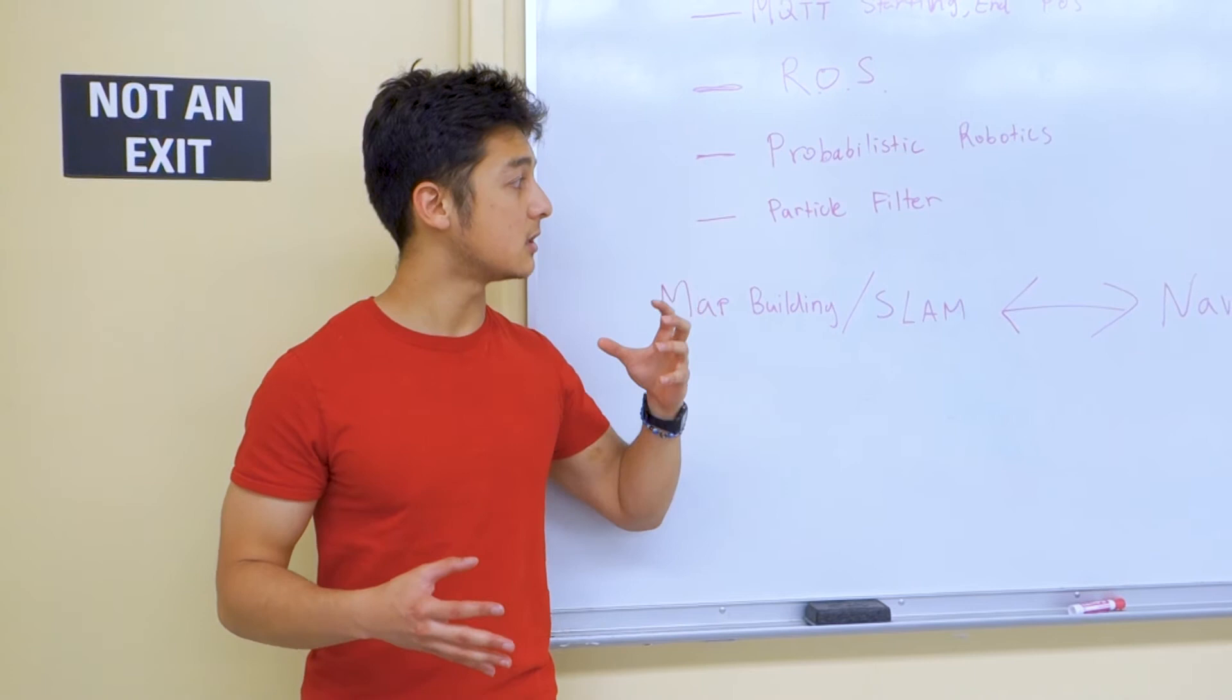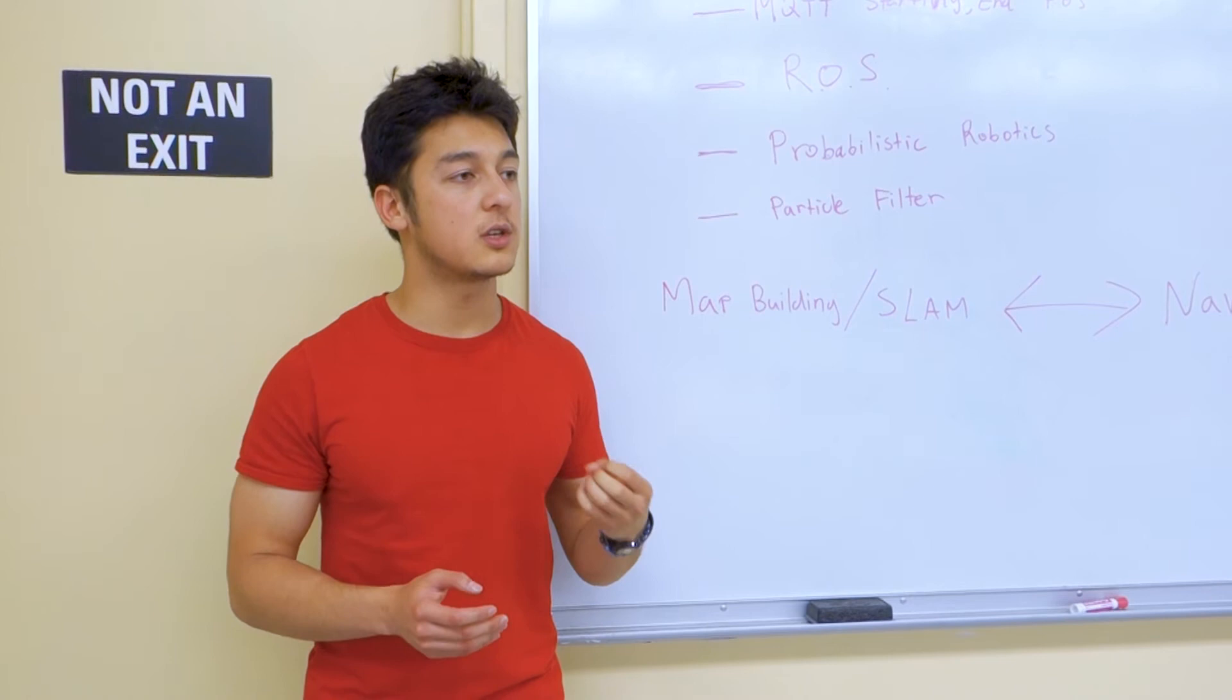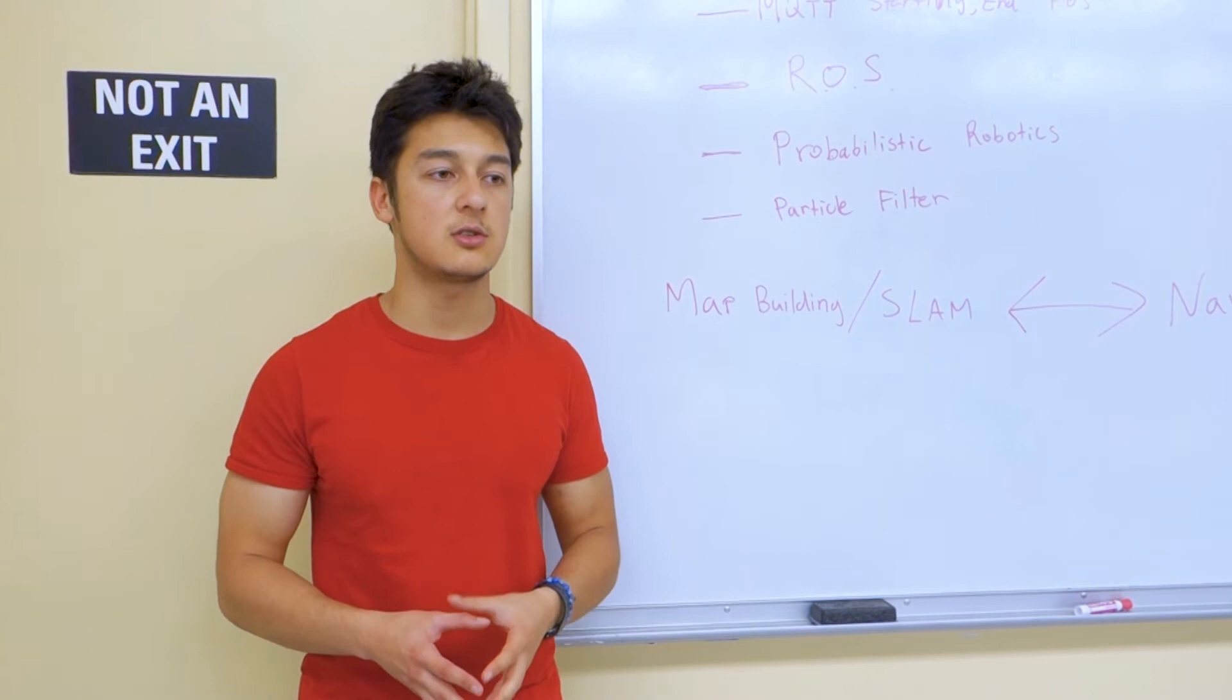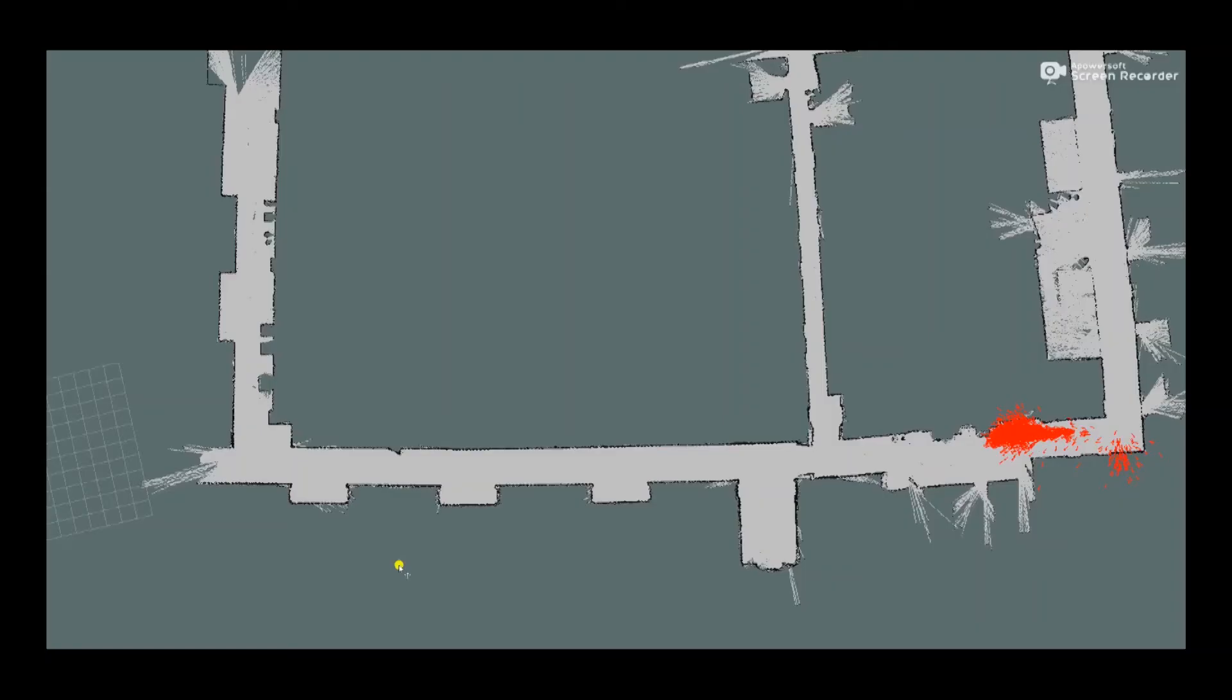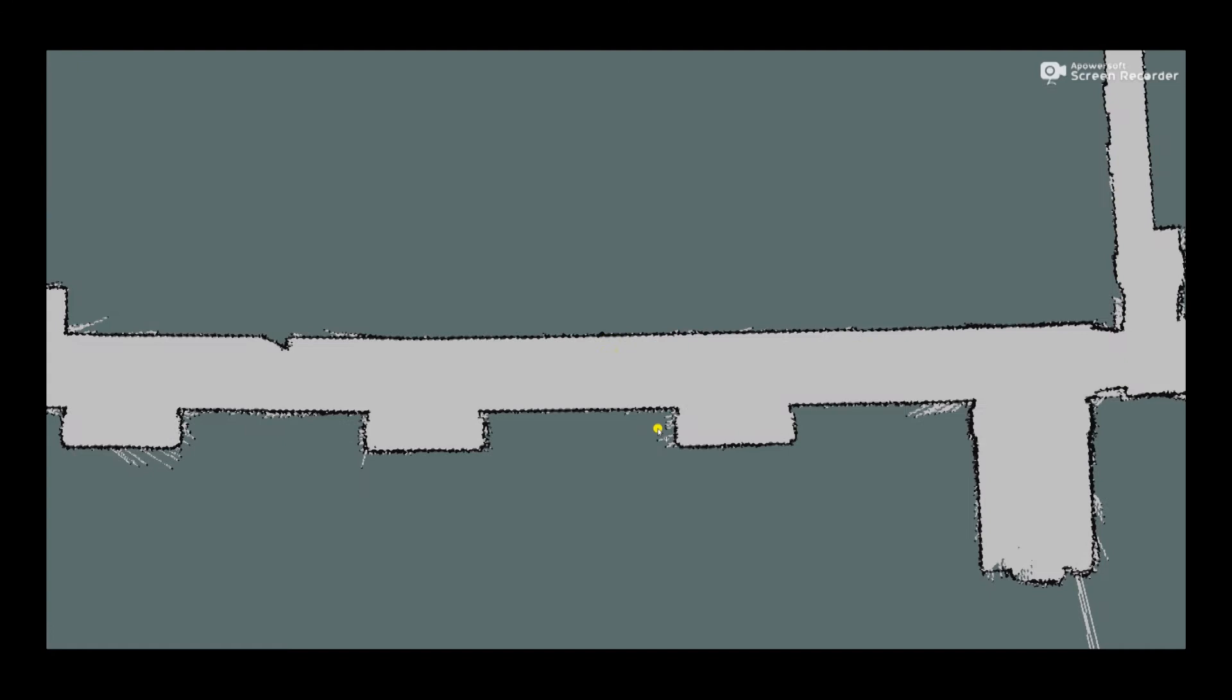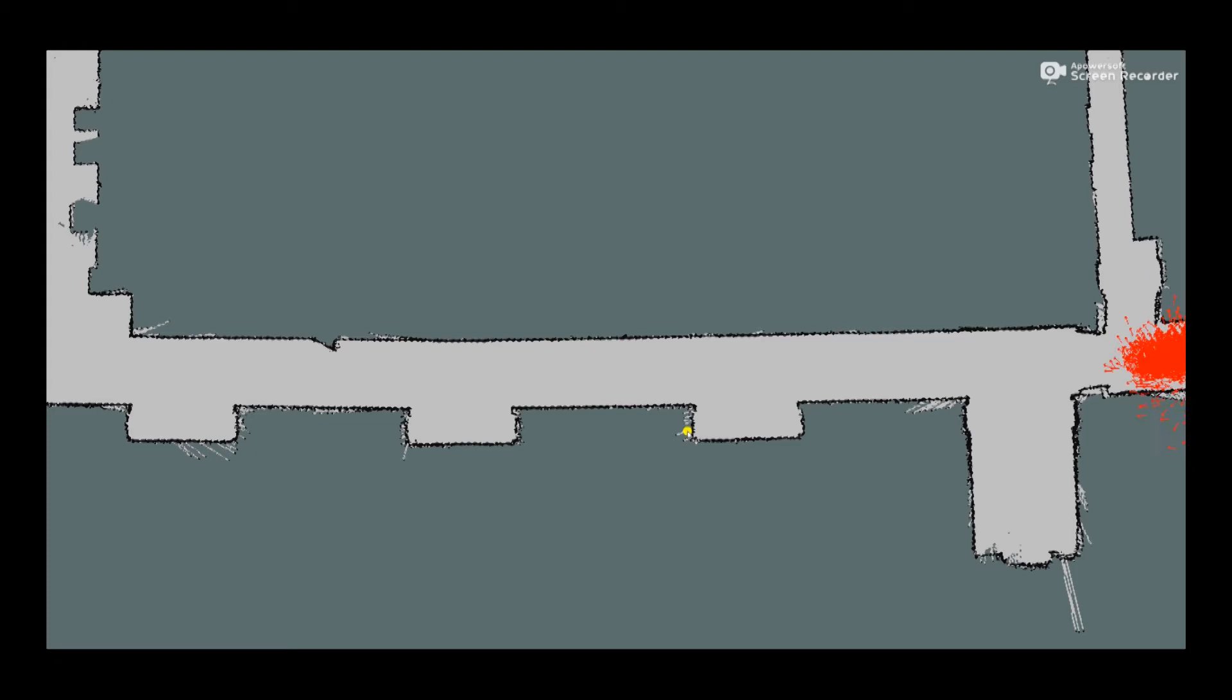We can't rely solely on the sensors to localize. The main algorithm that we use is called a particle filter. A particle filter will create various guesses. The robot will create various guesses of where it could potentially be on the map. Based on its current sensor readings, it will filter out all the unlikely guesses. After it filters out the unlikely guesses, we get a particle cloud around the robot's real position. Averaging all those particles in a particle cloud, we can get the robot's true position.